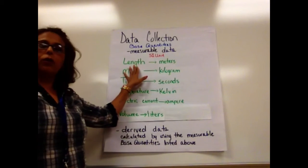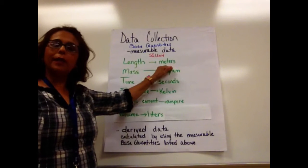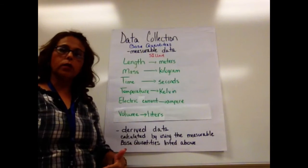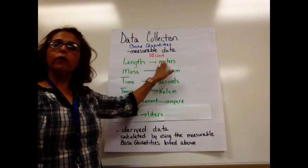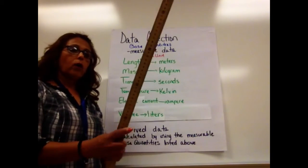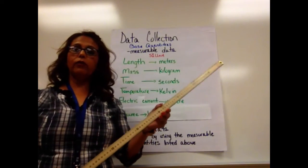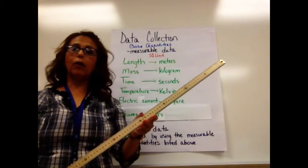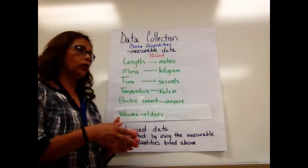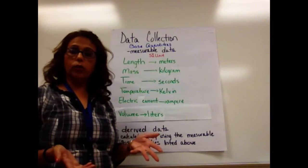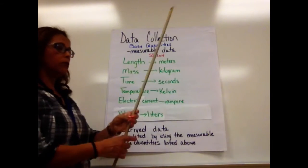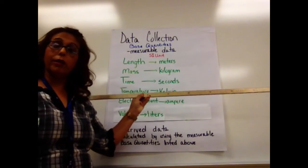The first base quantity is length. We measure length in terms of meters — that's the unit in the metric system that we use. Length has to be converted into meters in order for us to use it in formulas. Obviously I have a meter stick here, but we have different devices that allow us to measure length, including digital scanners. For general purposes, length is measured in meters using some sort of measuring device like a meter stick.